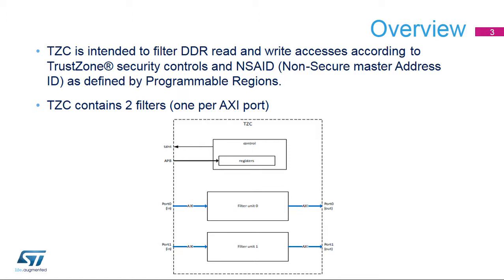This is a simplified diagram of TZC. TZC is composed of two filter units, one per AXI port. Filters are working concurrently. The two filters are controlled by a common control register set via the APB interface.